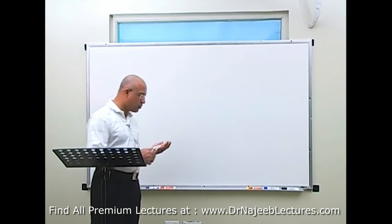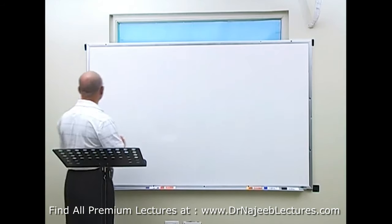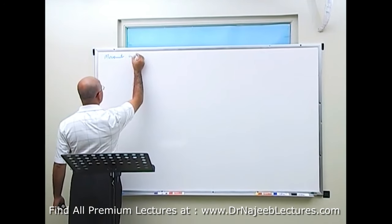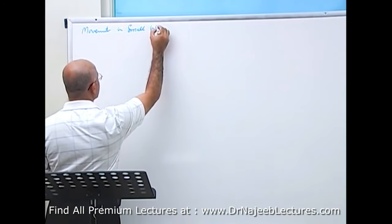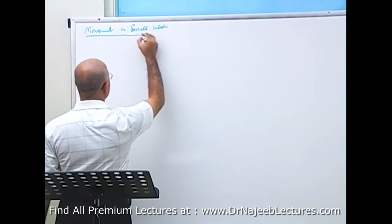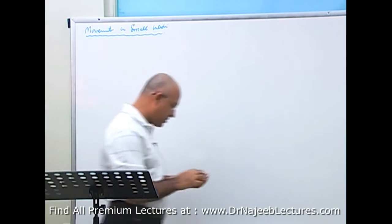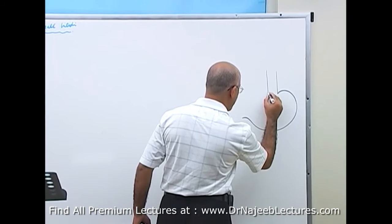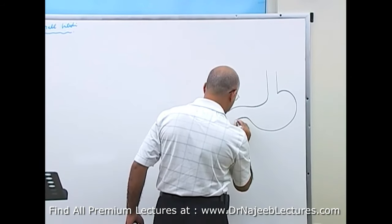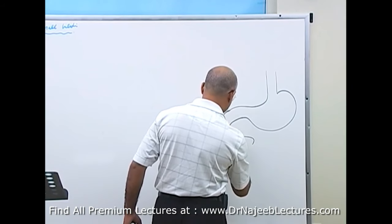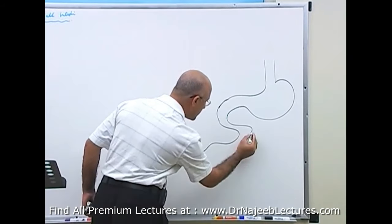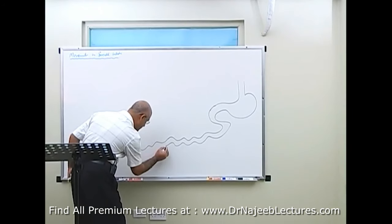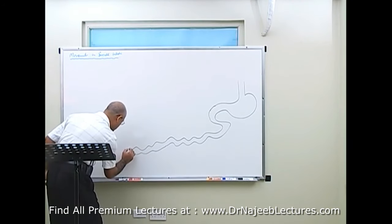Today we are going to talk about the movement of the small intestine. The small intestine consists of three parts: the duodenum, then the jejunum, and then the ileum, which terminates at the cecum.